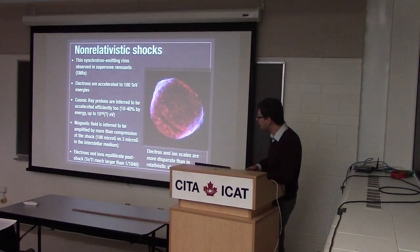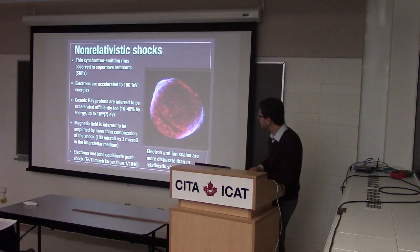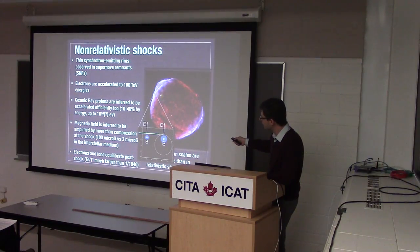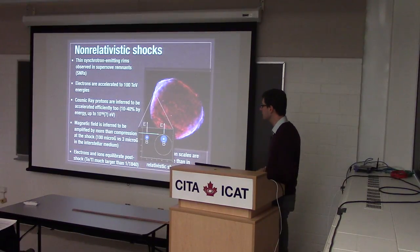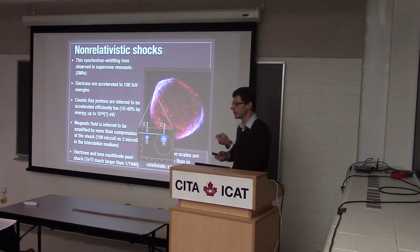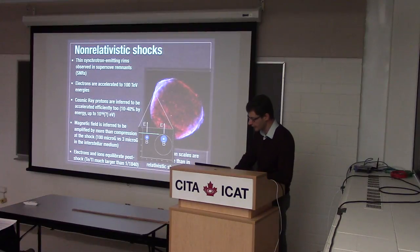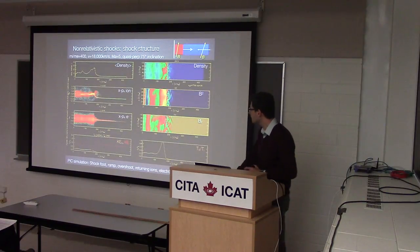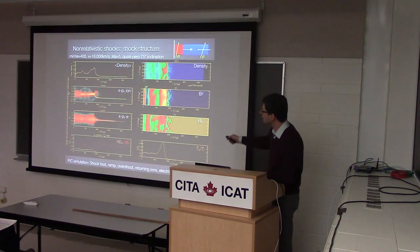We also have measurements of electron-to-ion temperature equilibration. The problem with non-relativistic shock acceleration is that electrons and ions have very disparate Larmor radii. If you can accelerate ions whose Larmor radius is the size of the shock transition, for electrons it will be much harder — their Larmor radii are much smaller.